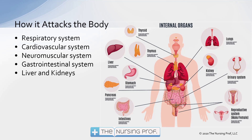Let's talk about how it attacks the body. First, the virus will usually attack the lungs because it is a respiratory transmission. It goes down into the lungs, causes some damage directly to the lung tissue itself, and then it gets into the bloodstream. From there, it can travel throughout the entire body — the cardiovascular system, the neuromuscular system including the brain, the gastrointestinal system, and the liver and kidneys. In addition to the damage caused by the virus itself, we also have secondary damage that may be caused by some of the treatments we're using to stabilize the patient.